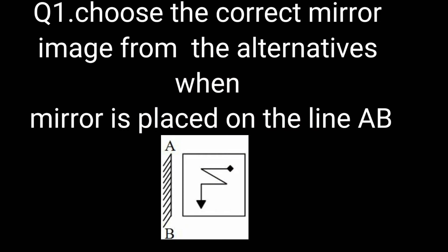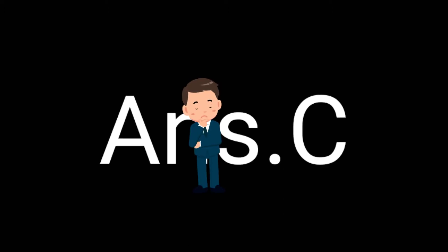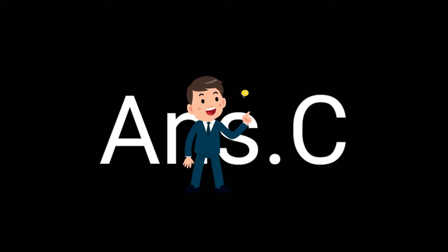Choose the correct mirror image from the alternatives when the mirror is placed on the line AB. Choose the correct option. Answer is option C.